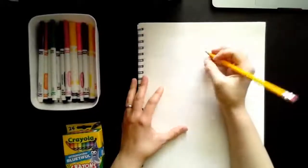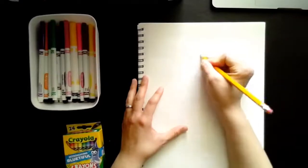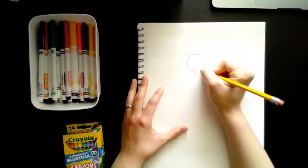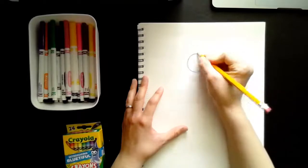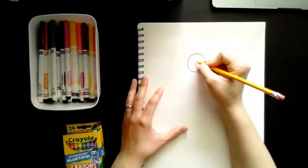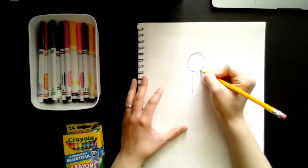Again, luckily, he's made of some pretty simple shapes. So I'm going to start off with a circle for his head again. And we're going to work our way down. And then two lines for his neck.